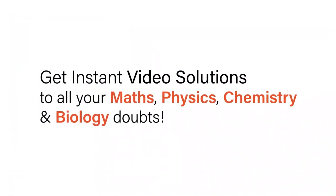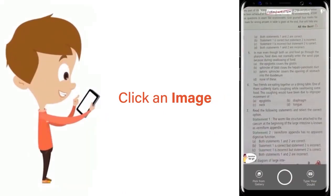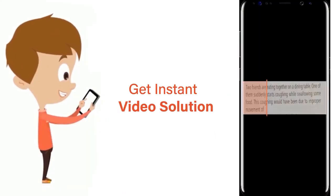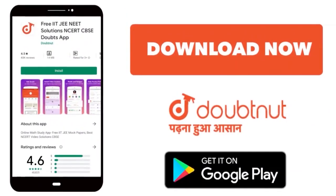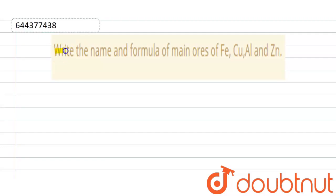With DoubtNet, get instant video solutions to all your maths, physics, chemistry, and biology doubts. Just click the image of the question, crop the question, and get instant video solution. Download DoubtNet app today. Our question is: write the name and formula of main ores of iron, copper, aluminium, and zinc.